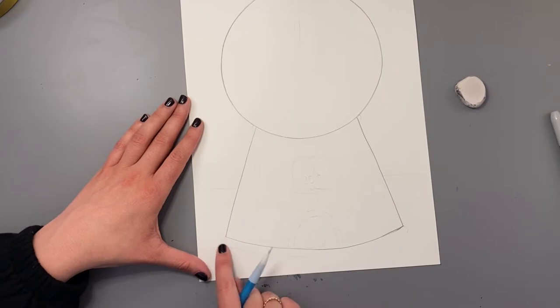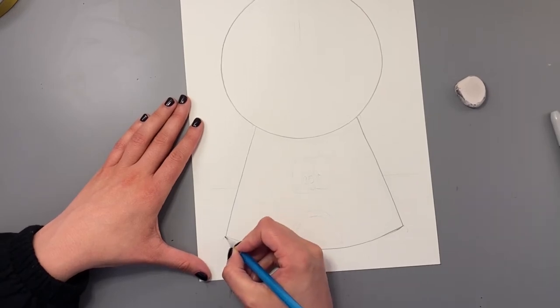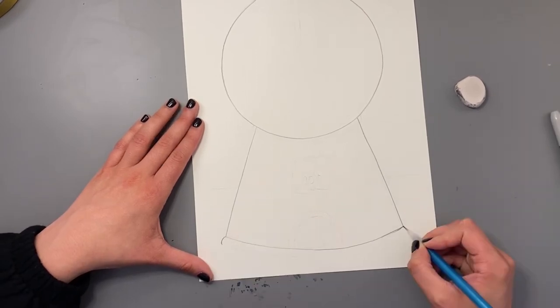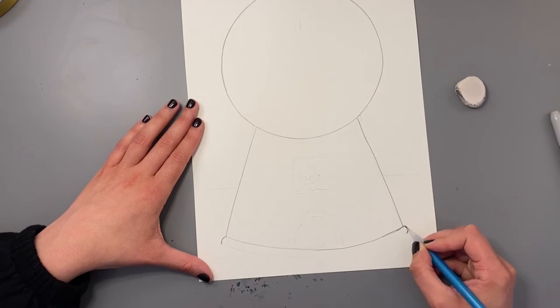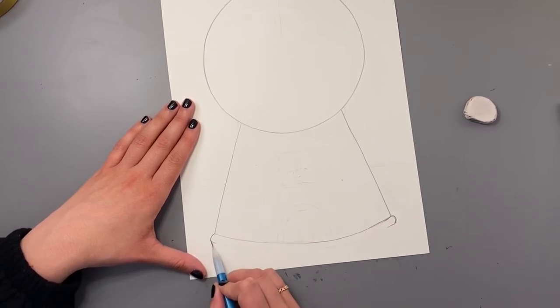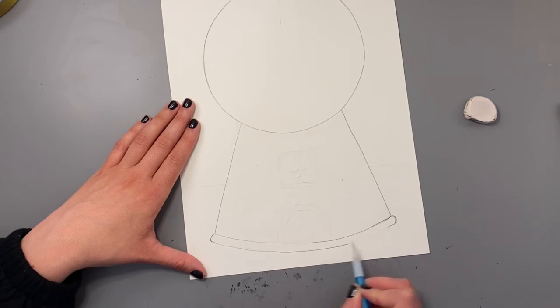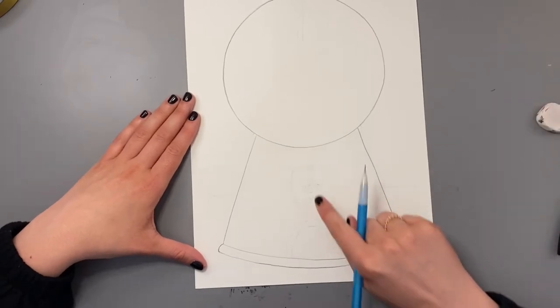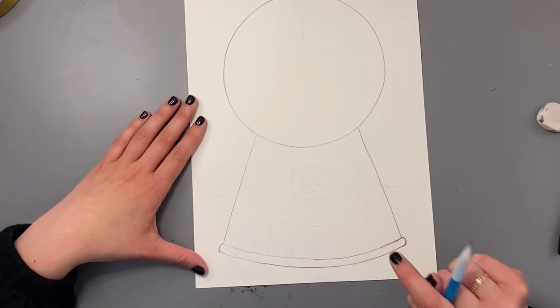And then we're going to draw a slightly curved line for the bottom of the base. Then on the corners of the bottom, we're going to draw two little curves to make these edges rounded a little bit. So one on each side and then we're going to draw another curved line for the bottom of the base. So we'll have two curved lines that are going at the same direction.